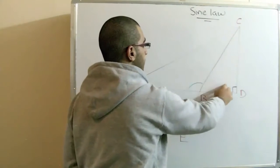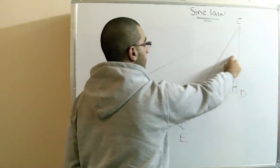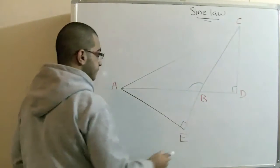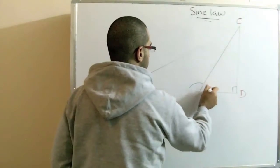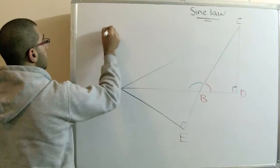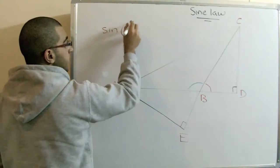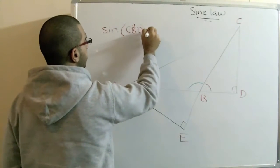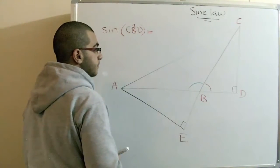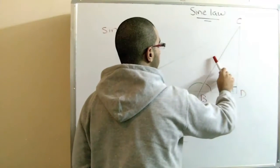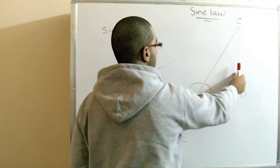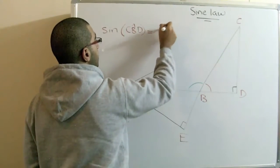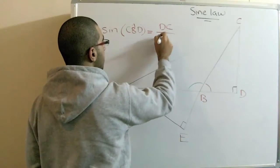Here this is a right angle triangle, triangle CDP. In this triangle, sin CBD equals the opposite over the hypotenuse. The opposite over the hypotenuse. So we get DC over BC.